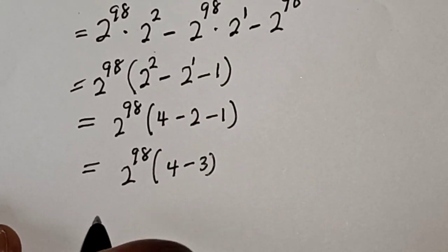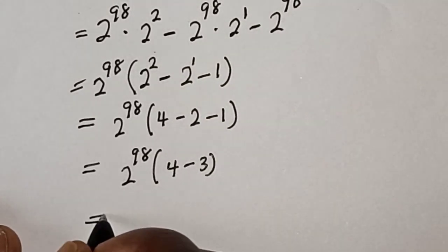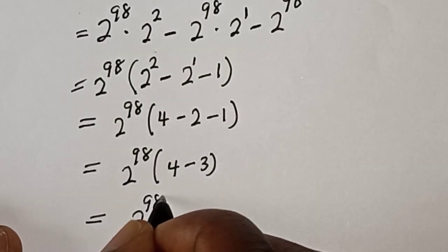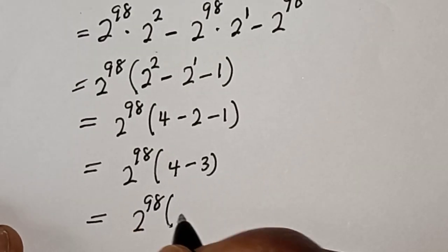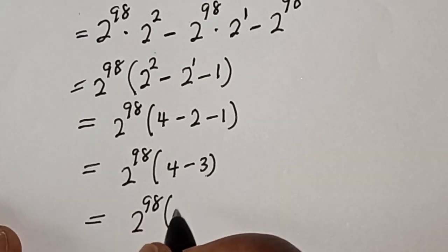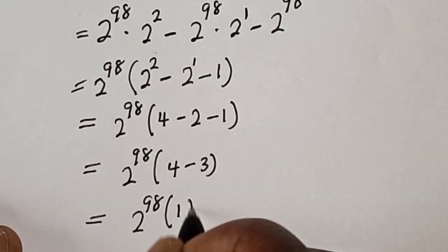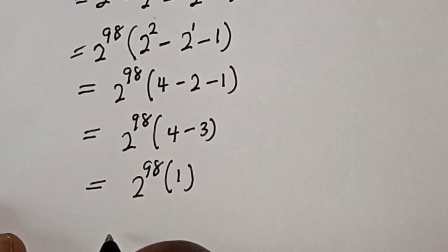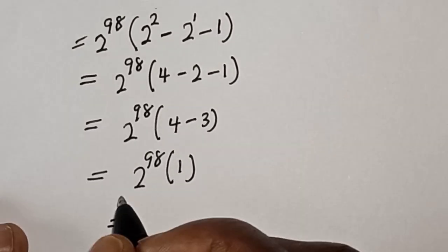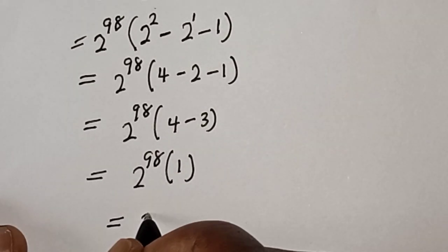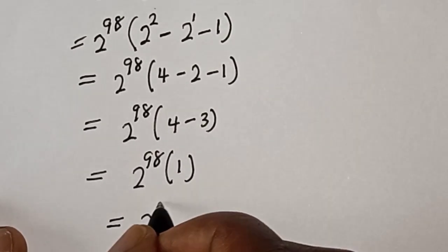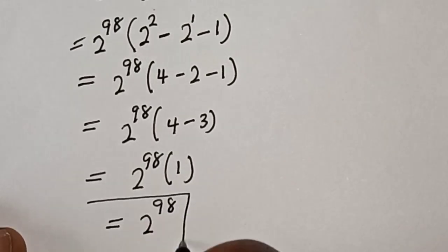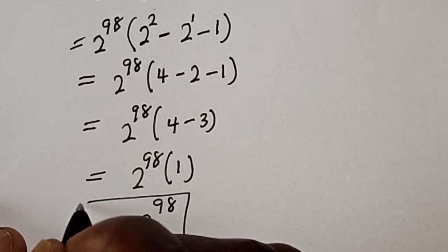Then this is equal to 2 raised to the power 98 bracket 4 minus 3, which is 1. And 2 raised to the power 98 times 1 is equal to 2 raised to the power 98. And that is our final answer.